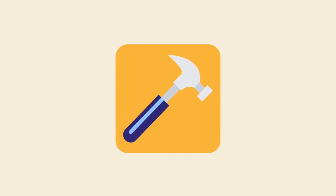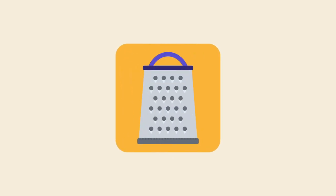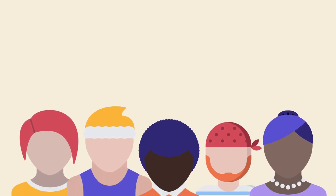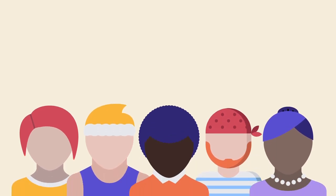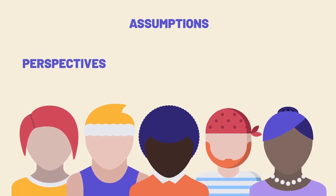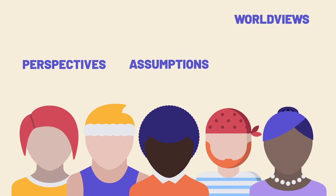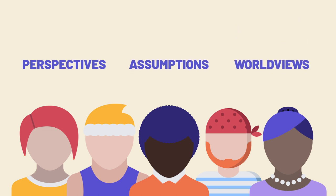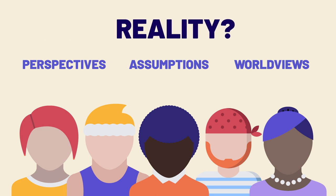Math is a tool. It doesn't have any more of a perspective than a hammer or more opinions than a cheese grater. Humans, on the other hand, are full of bias. They have unique perspectives, assumptions, and worldviews embedded so deeply that it can feel like they are simply expressions of our objective reality.